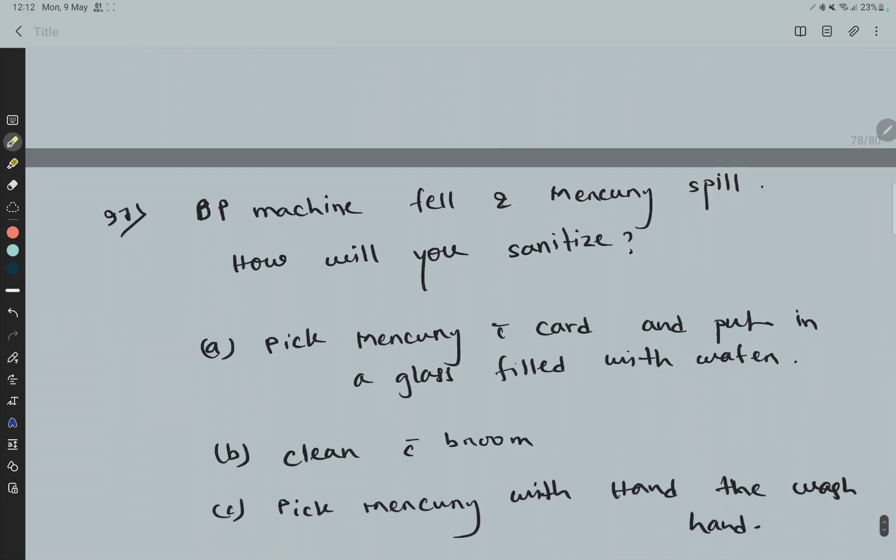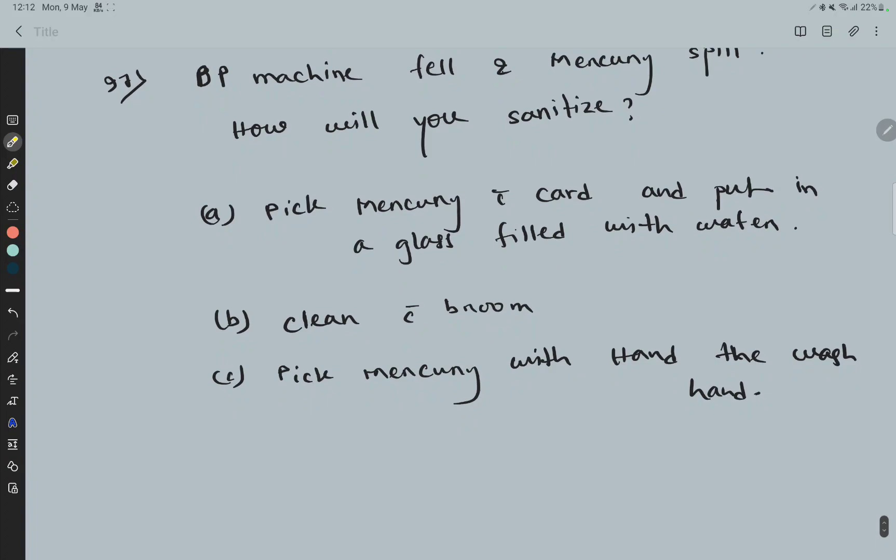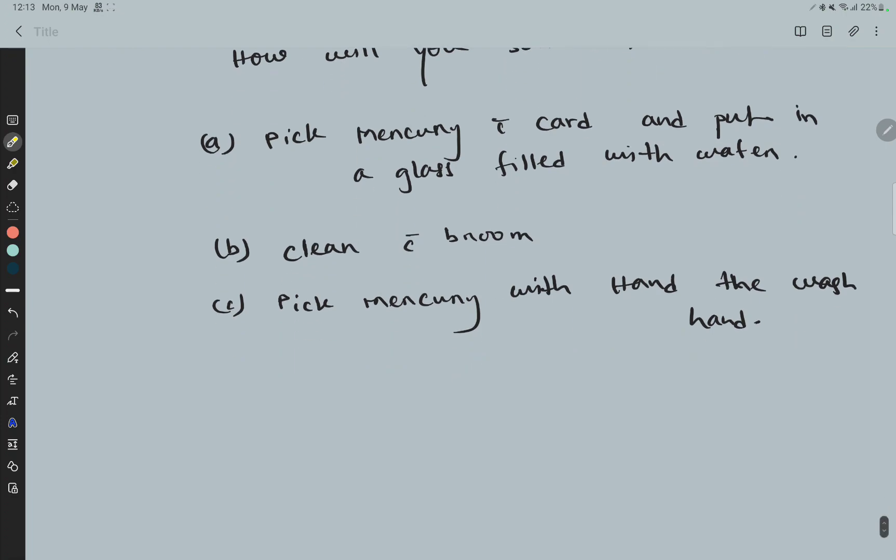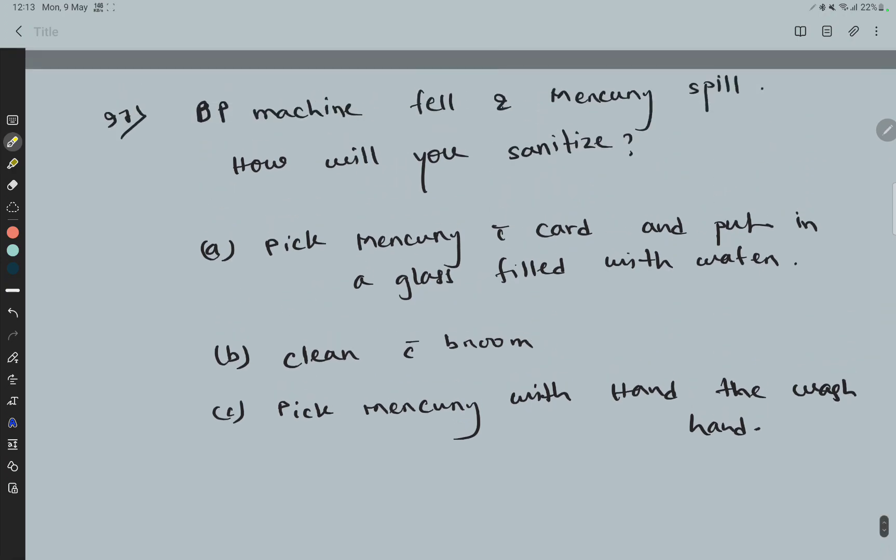Question 97: BP machine fell and mercury spilled. How will you sanitize? Option a) Pick mercury with card and put in a glass filled with water, b) Clean with broom, c) Pick mercury with hand and wash the hand. The answer is a: pick mercury with card and put in a glass filled with water.